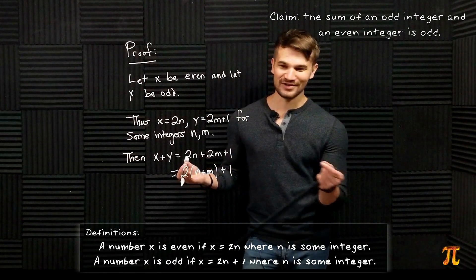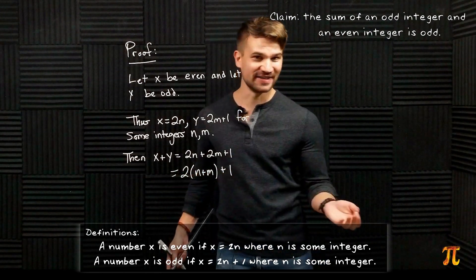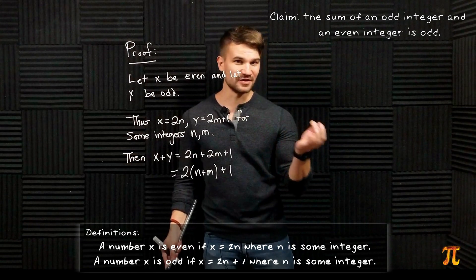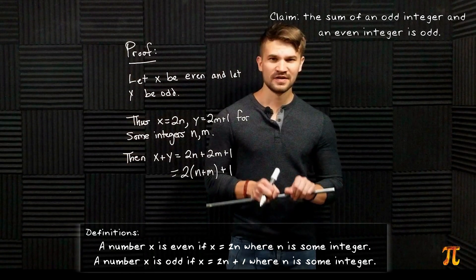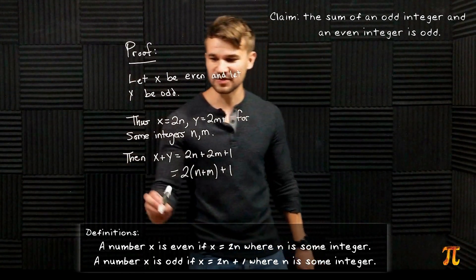And here we have a result. Since n and m are integers, n + m is also an integer, and here we have 2 times the integer plus 1. That is the definition of being odd. Therefore x + y is odd.